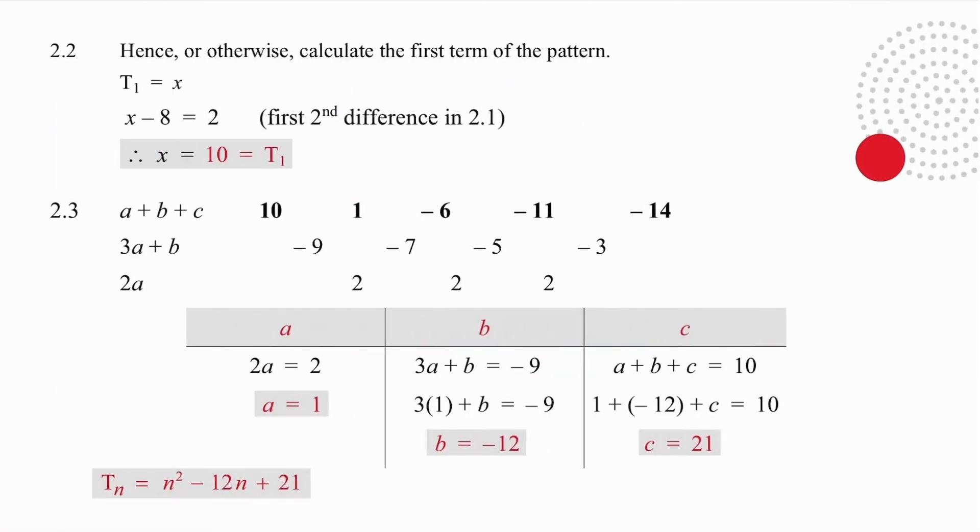To work out the value of the first term, we have a look at what we've done and we notice that x minus 8 is the second difference in terms of x and we know the second difference is equal to 2. So, equating those two results gives us x equal to 10, which in this case is the value of the first term. Pause the video, check your answers to 2.3 and when you're ready, we'll do example 3.